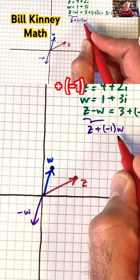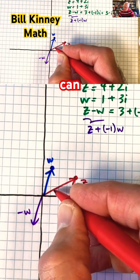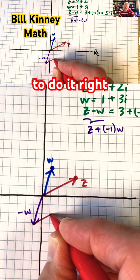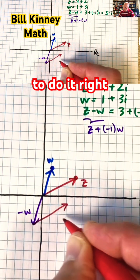I can translate z down here and plot it, being careful to do it right, like that.